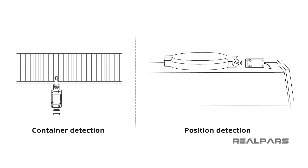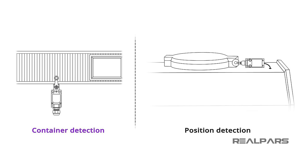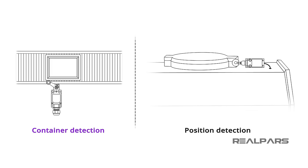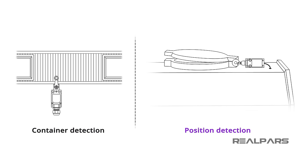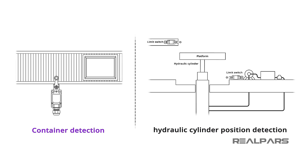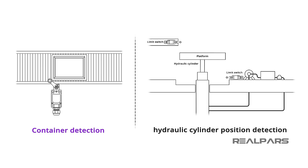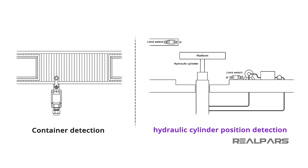Now that you have seen the limit switch in action, you are probably thinking about some of the applications where you have seen them. For example, you might see a limit switch operated by a container on an assembly line, or operated by a rotating machine part, or by any number of other moving mechanical objects. A limit switch could be used to count passing objects or to determine the position of a hydraulic cylinder.